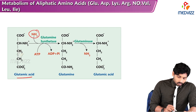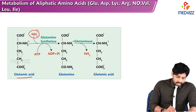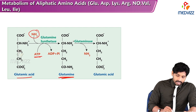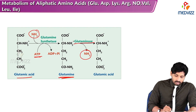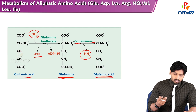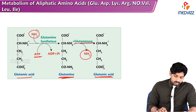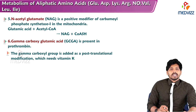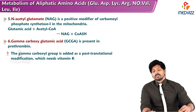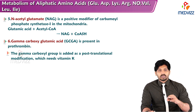Glutamic acid, after accepting ammonia with the help of glutamine synthetase and ATP investment, is converted to glutamine. By the enzyme glutaminase, ammonia is removed to form glutamic acid again. This is one source for glutamic acid synthesis. N-acetyl glutamate is a positive modifier of carbamoyl phosphate synthetase 1 (CPS1).